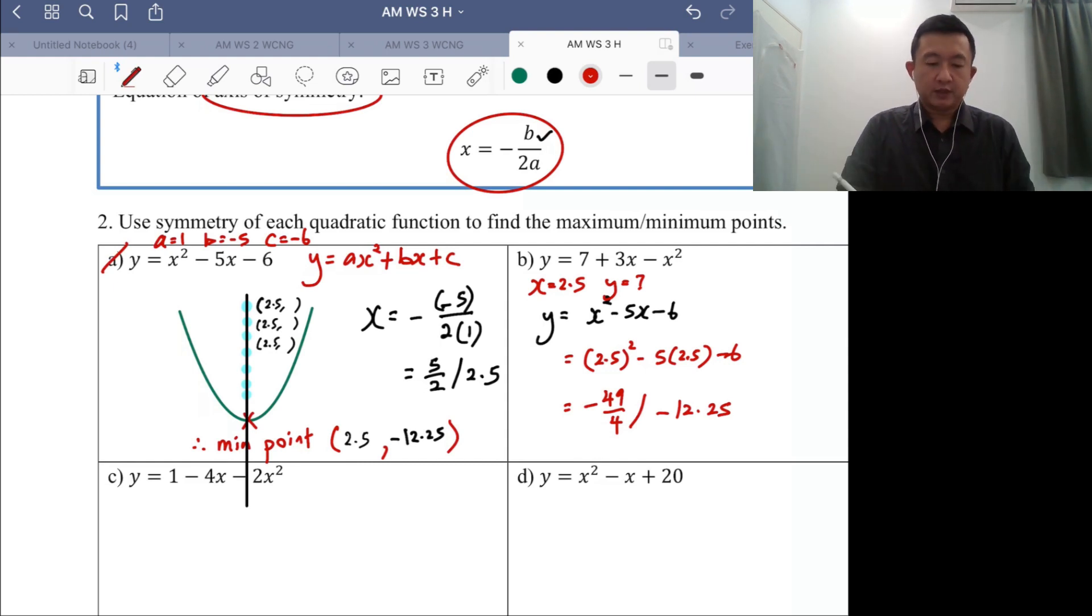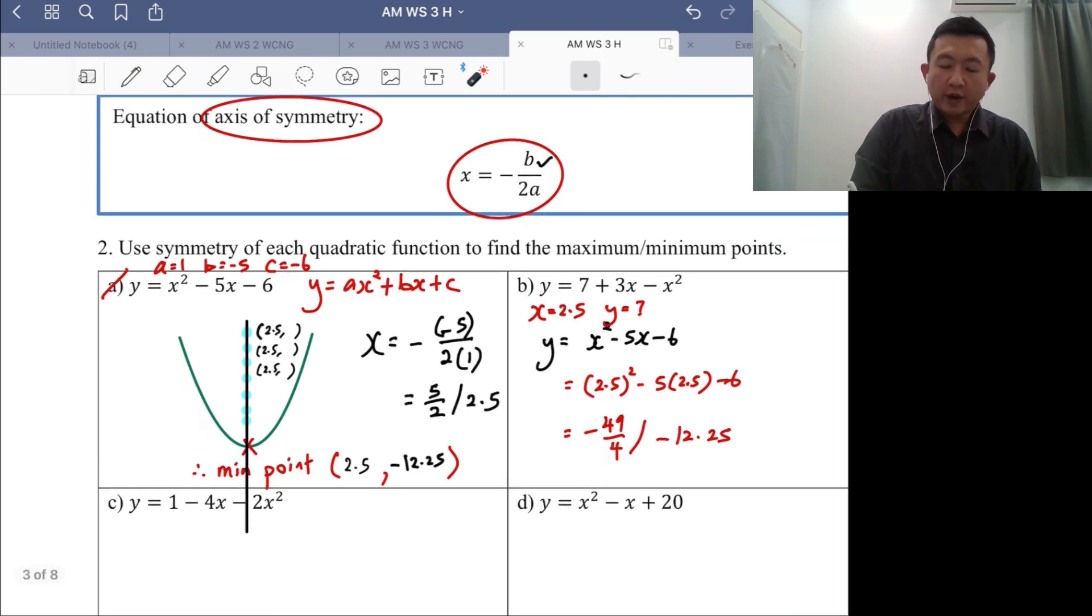So I'll repeat one more time. You can always use negative b over 2a as the x value of the turning point. They share the same x value. Once you get the x value by using negative b over 2a, you can substitute the x value into the quadratic function to find the value of y. And therefore, you have a coordinate for the turning or stationary point. Thank you.